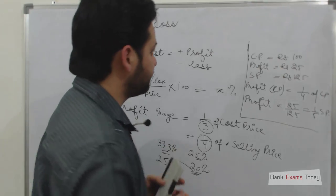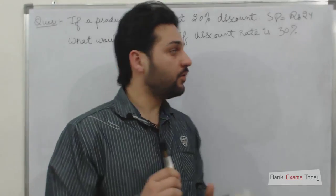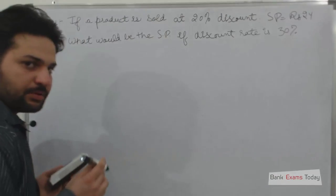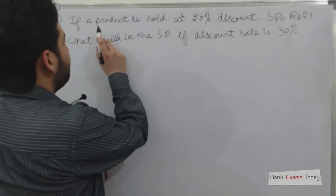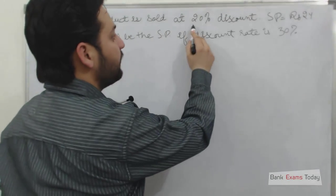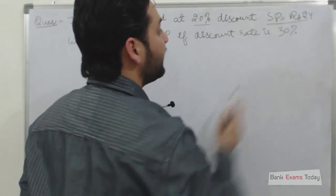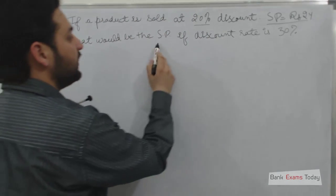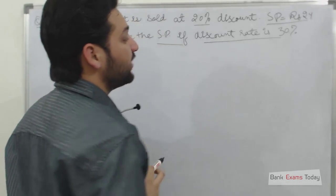Let's do a very important question, very simple one. If a product is sold at 20% discount and its selling price is Rs. 24, what would be the selling price if discount rate is 30%?